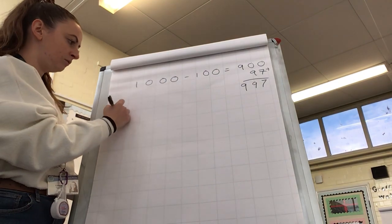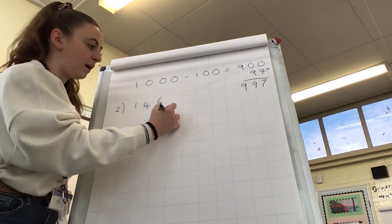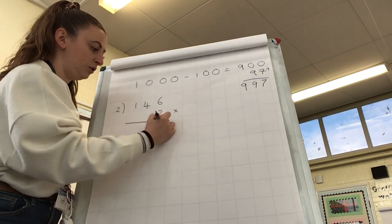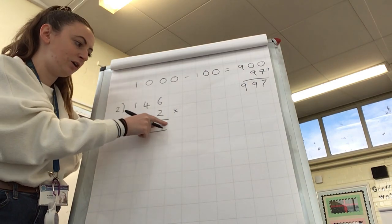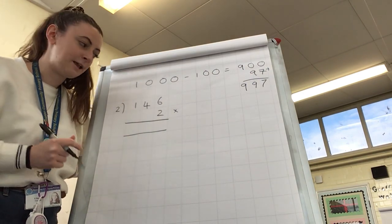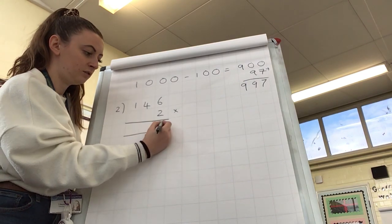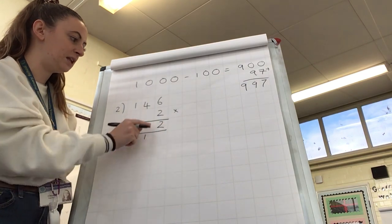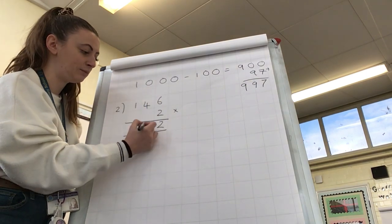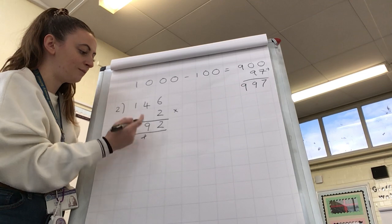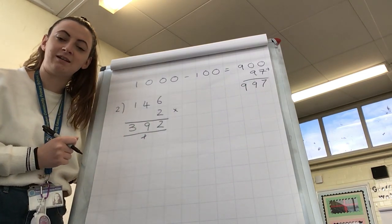Question number two was 146 multiplied by 2. So I'm going to set it out using the column method. And because we're only multiplying by ones, then we only need to have one space for our answer here. 6 multiplied by 2 is 12. So we're going to carry the 1, 2 underneath. 2 times 4 is 8, but we must remember the 1, 10 underneath here. 8 plus 1 is 9. 2 times 1 is 2. So our answer to number 2 is 292.